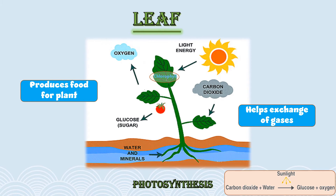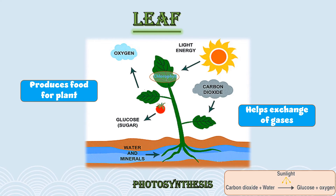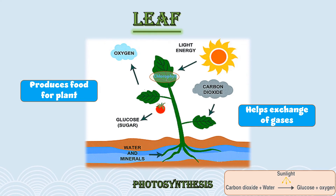Here is a very interesting fact: in the photosynthesis process, oxygen is released and carbon dioxide is taken in by the plant. The plant also undergoes another process called respiration, in which carbon dioxide is released into the atmosphere and oxygen is taken in. To understand the difference between photosynthesis and respiration, please watch my video named 'Photosynthesis versus Respiration'.